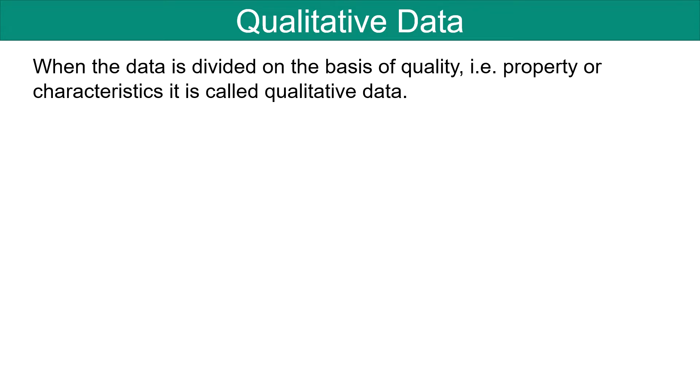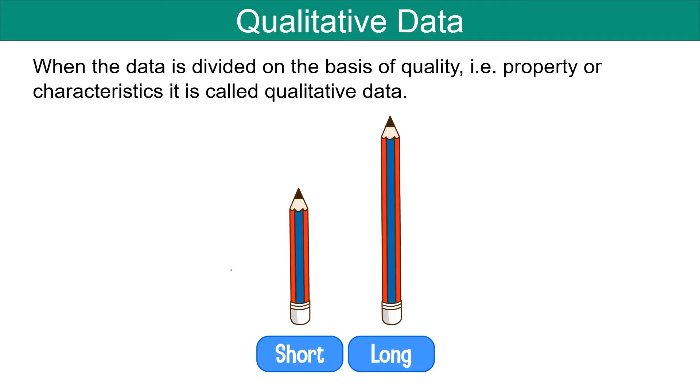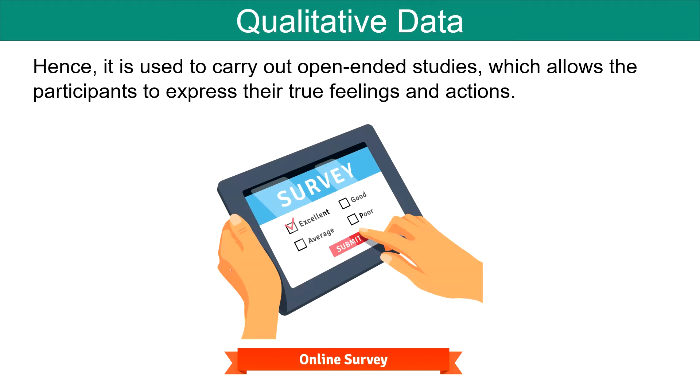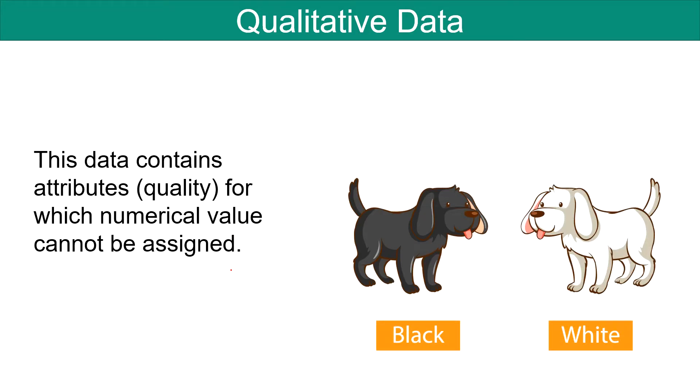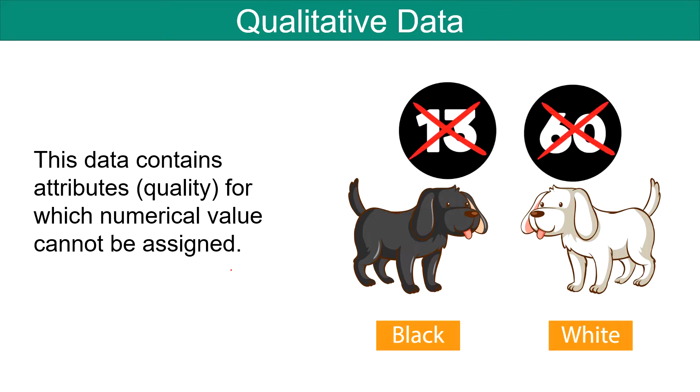Qualitative Data: When the data is based on quality, i.e. property or characteristics, it is called Qualitative Data. It is based on observations, hence it is used to carry out open-ended studies which allows the participants to express their true feelings and actions. This data contains attributes, i.e. quality, for which numerical value cannot be assigned—it cannot be transformed into numbers.